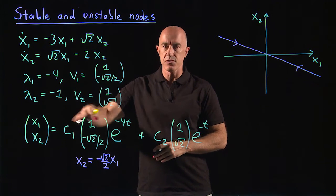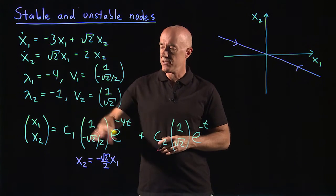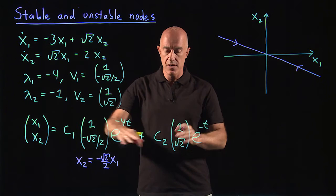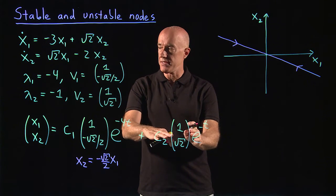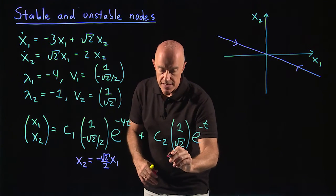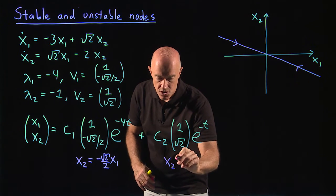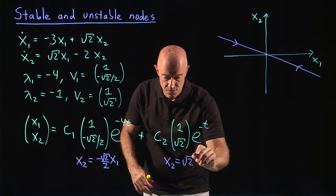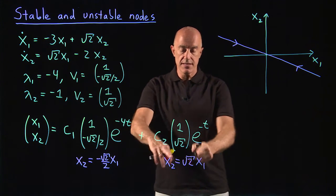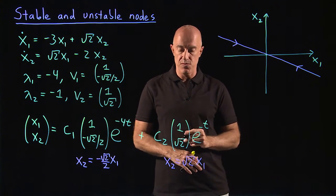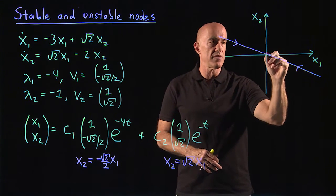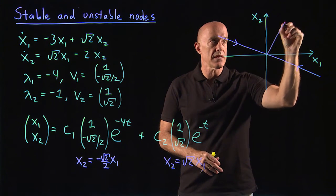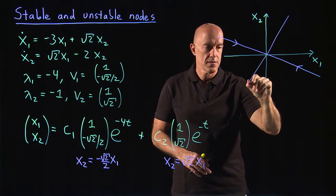Okay, then we can draw the other eigenvector. So if c1 equals 0, so the initial conditions such that c1 equals 0, the solution follows the second eigenvector. And here x2 is always going to be equal to the square root of 2 times x1. That's a line of positive slope root 2, slightly larger than 1. So it looks something like this.